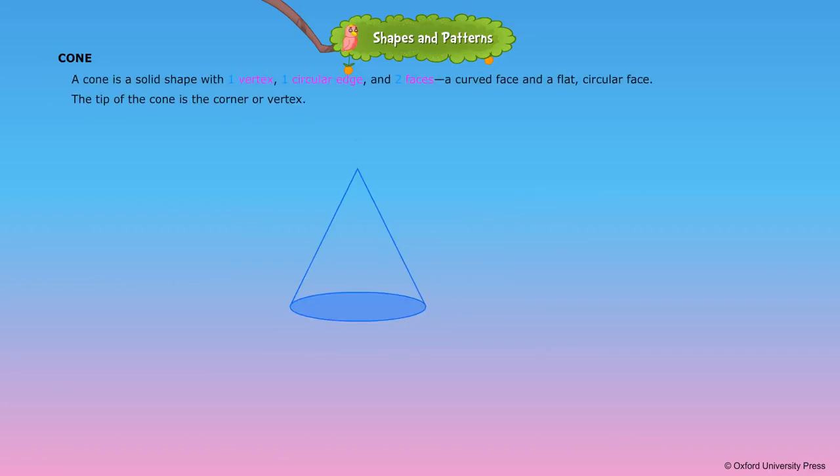A cone is a solid shape with one vertex, one circular edge, and two faces: a curved face and a flat circular face. The tip of the cone is the corner or vertex.